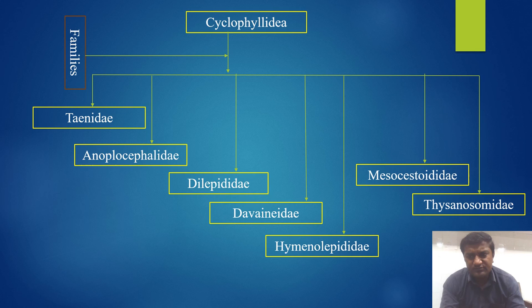The order Pseudophyllidea is divided into two main families: Diphyllobothriidae and Bothriocephalidae.